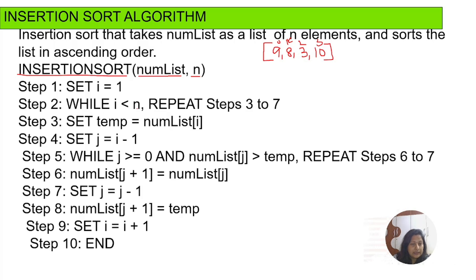While i is less than n — i is 1 and n is 4 (because 4 elements are there) — the condition is true. If the condition is true, repeat steps 3 to 7. Set the temporary variable TEMP equal to numlist[i]. We are storing the first-index element (which is 8) in TEMP. In insertion sort we use a temporary variable for swapping. After that, set j equal to i minus 1, which is 1 minus 1 = 0, for the inner loop.